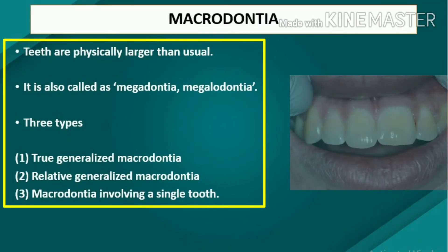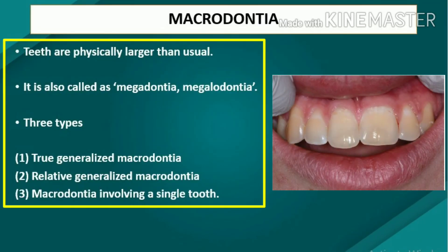Macrodontia is the opposite of microdontia and refers to teeth that are larger than normal. Such teeth may be classified in the same manner as microdontia. It is also called megadontia or megalodontia. Three types of macrodontia are recognized.